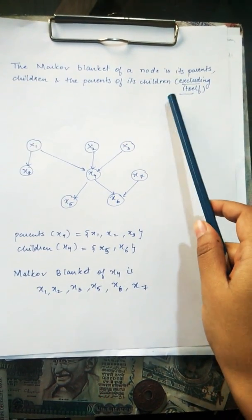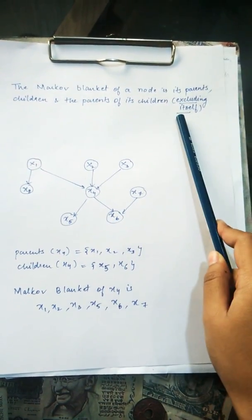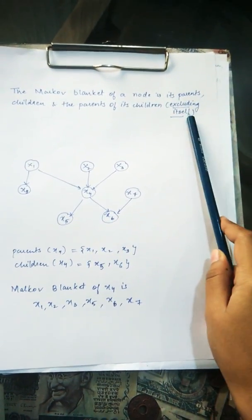The Markov blanket of a node is its parents, children, and the parents of its children, excluding itself.